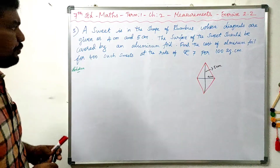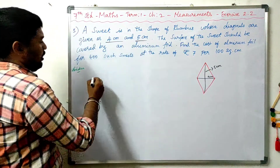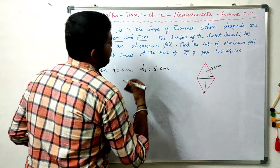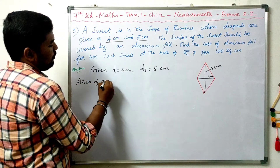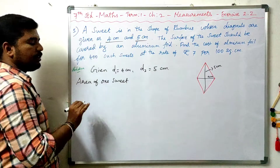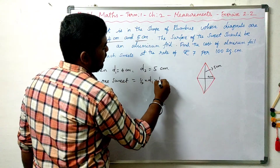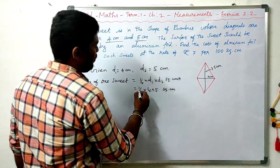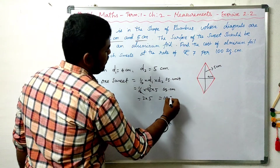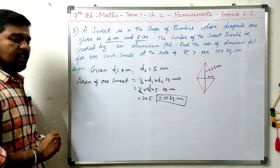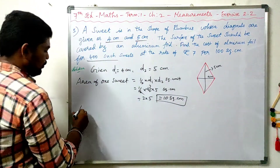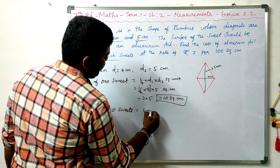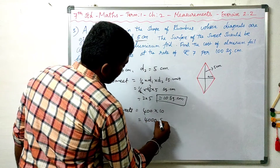Given: D1 = 4 cm and D2 = 5 cm. Area of 1 suite = half into D1 into D2 = half into 4 into 5 = 10 square centimeters. This is the area of 1 suite. Area of 400 suites = 400 into 10 = 4000 square centimeters.